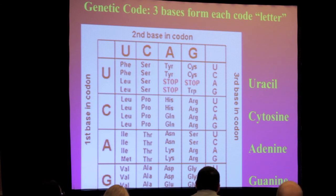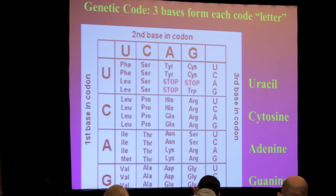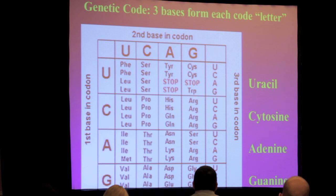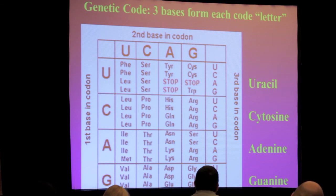Uracil is basically thymine in a slightly different form, and that's what's part of RNA. These bases form codes — combinations of three bases may form a certain amino acid, which is what composes proteins. These various amino acids are produced as a result of reading the code, and then they form proteins by serially arraying in a certain configuration and pattern. So this genetic code gets translated into amino acids that then form proteins, and that's what functions in our cells.